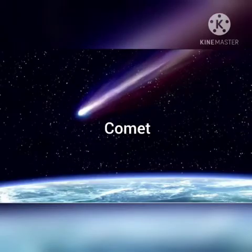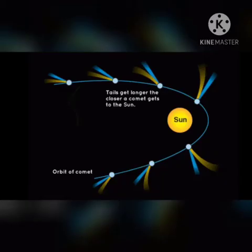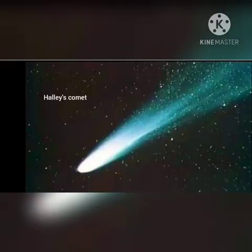Comets. A comet is a large lump of frozen gases mixed with bits of rocks and dust. When it comes close to the sun, the solar wind from the sun blows particles from the comet into a tail which always points away from the sun. The famous comet is Halley's Comet. It looks like a star with a tail.